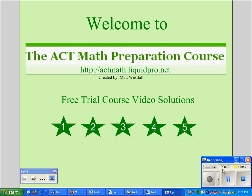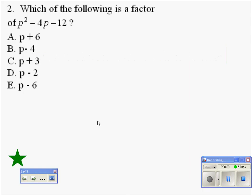Welcome to the ACT Math Preparation Course, Free Trial Course Video Solutions. Let's take a look at the solution to question number 2. The question asks, which of the following is a factor of p squared minus 4p minus 12?